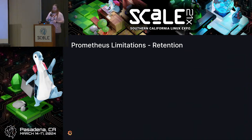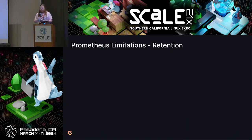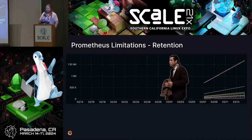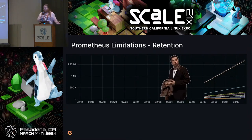The third limitation is around retention. If you've used open source Prometheus, you know the retention is going to be a week, two weeks, maybe three weeks. You can set it longer, but it doesn't really handle that very well — it's not designed to. If you wanted to run a query in Grafana that went back more than a week, you'll end up with a graph where you only have data as far back as your retention actually is, and the rest just isn't there.